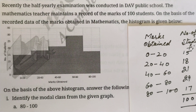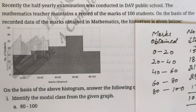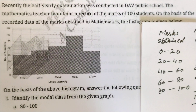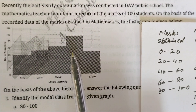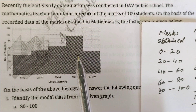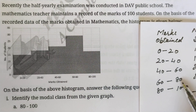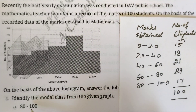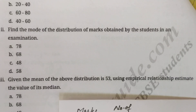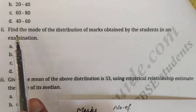The first question asks: identify the modal class from the given graph. The modal class is the class with the maximum frequency. The maximum frequency is 29, which corresponds to the class 60 to 80. So 60 to 80 is the modal class, and option C is correct.